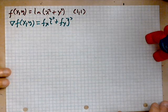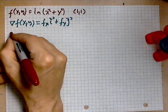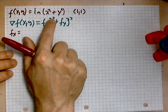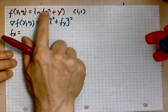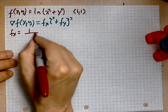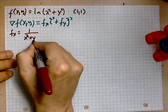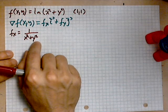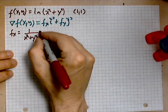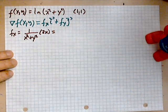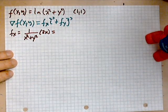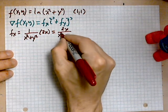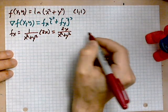So the first step is find the partials. The partial with respect to x you have to find by using the chain rule. First you differentiate the ln function which is 1 over (x² + y²). Once you've done that you've got to differentiate the bottom with respect to x, so that's just 2x. Which means the partial with respect to x for this function is 2x over (x² + y²).